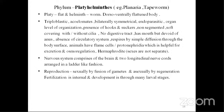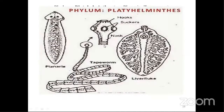Platyhelminthes are hermaphrodite — both male and female reproductive organs present in the same organism (monoecious). The nervous system comprises a brain and two longitudinal nerve cords arranged ladder-like. Reproduction is sexual by fusion of gametes, and asexual by regeneration. Fertilization is internal. Development is through many larval stages (indirect). Examples: liver fluke, tapeworm, and Planaria. They have hooks for anchoring and suckers — the head region of tapeworm has suckers to attach and absorb material.